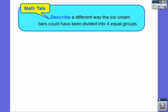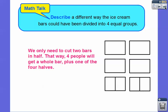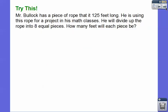Describe a different way the ice cream bars could have been divided into four equal groups. We only needed to cut two of the bars in half. That way, four people can each have one whole bar, and then each person gets one of these halves. You didn't need to cut them all up.